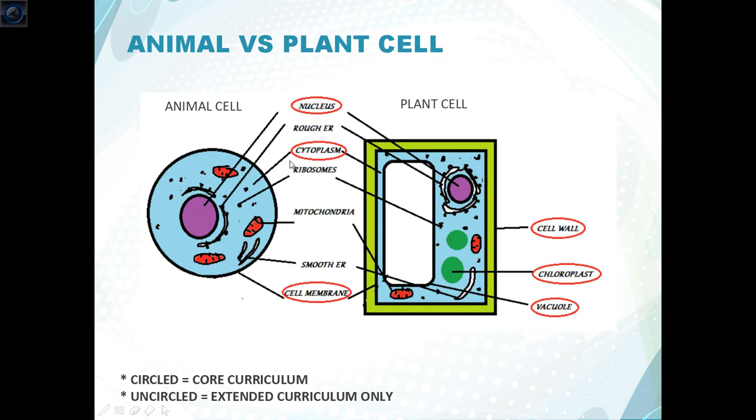So the rough endoplasmic reticulum is a bunch of flattened sacs located outside the nucleus and has ribosomes attached onto it as so. Now smooth endoplasmic reticulum